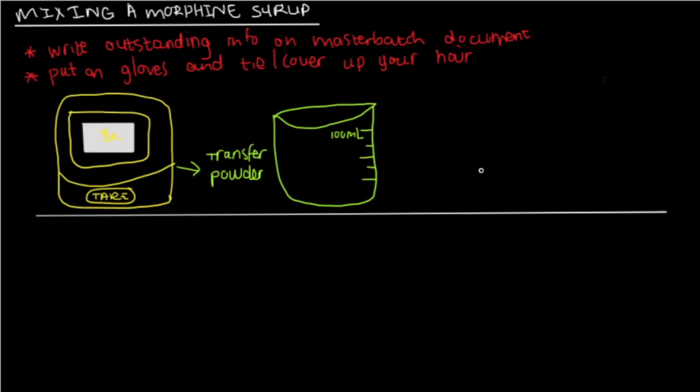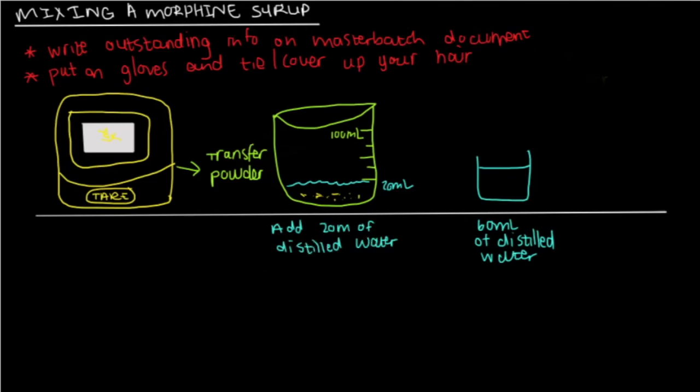So, step six is going to be to measure distilled water, 60 milliliters, in one of the containers that you set aside for measuring the liquid. And then, you add 20 milliliters of that water to your morphine powder. And then, you're going to shake your bottle, or you're going to stir in your glass container.